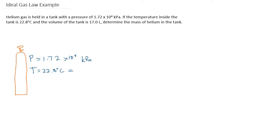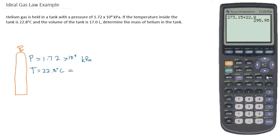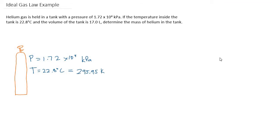We are going to add 273.15 to that. So we see that the temperature is 295.95 Kelvins. We are also told that the volume is 17.0 liters, and we are asked to find the mass of helium in the tank.